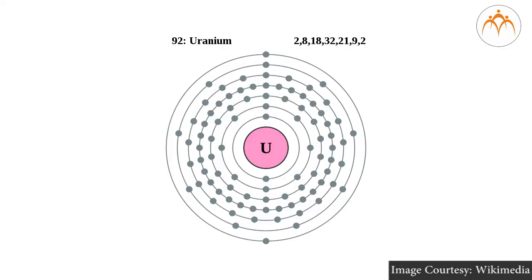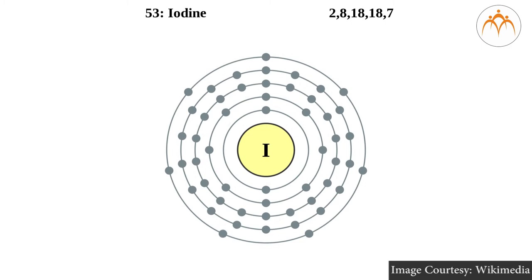Isotopes of some elements are radioactive. They are used in industry, agriculture, medicine, research, etc. For example, uranium-235 is used for nuclear fission or producing electricity as nuclear fuel. Iodine-131 is used for treatment of goiter.